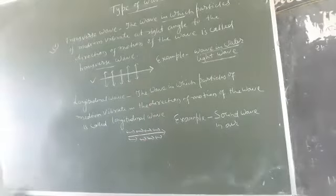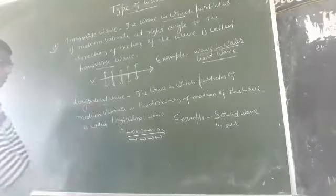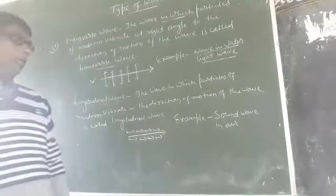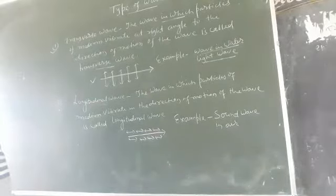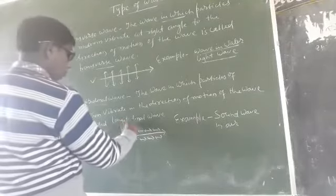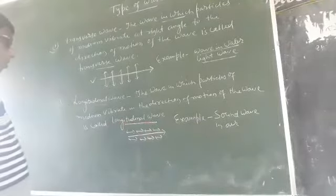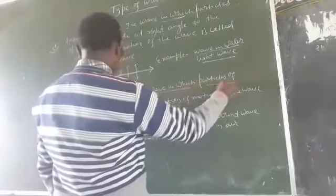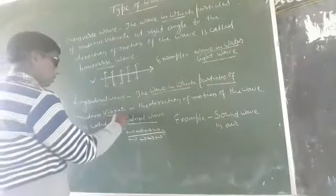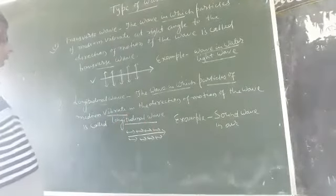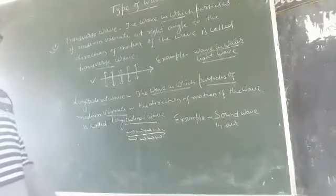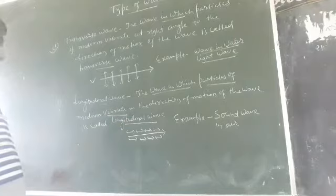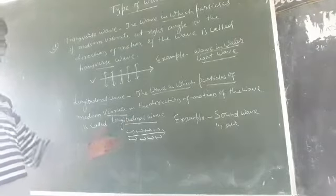The second type of wave is the longitudinal wave. The wave in which particles of the medium vibrate in the direction of motion of the wave is called a longitudinal wave. This is clear from the figure.